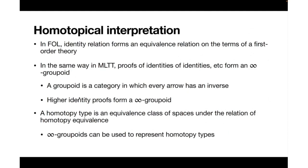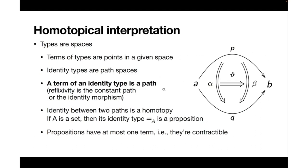What the homotopical interpretation allows us to do is construct these intricate many levels of paths between paths between paths. If you consider extensional type theory, then all this higher-order structure collapses to the usual notion of identity in, for example, set theory.